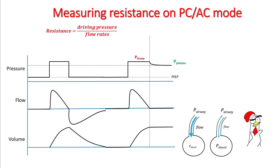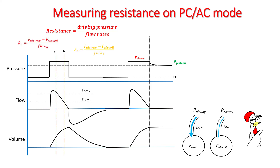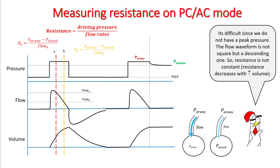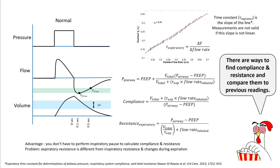Resistance in PCAC mode is very difficult to measure. At point A and point B, the resistance in both places are different. At point A, there is a high gradient between P-airway and P-alveoli and the flow is pretty high, while at point B the pressure gradient is much smaller and flow is much smaller. So the resistance keeps on varying and usually the resistance will drop as your volume increases. There are a couple of other ways to figure out resistance in the circuit by using expiratory time constant, but these methods are more complicated.